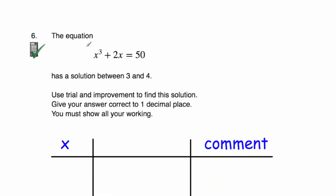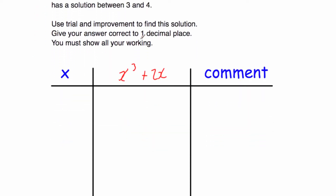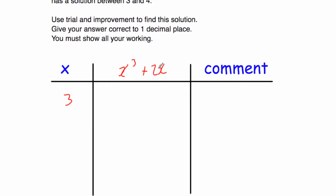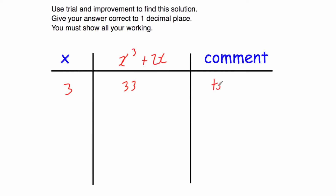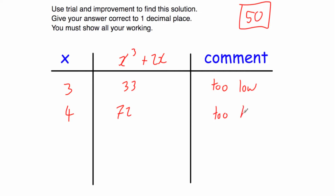Question 6: the equation x cubed plus 2x equals 50 has a solution between 3 and 4. Use trial and improvement to give your answer correct to one decimal place. Let's try 3: 3 cubed plus 2 times 3 equals 33 — too low. Let's try 4: 4 cubed plus 2 times 4 equals 72 — too high. Let's try 3.5: 3.5 cubed plus 2 times 3.5 equals 49.875 — close to 50 but too low.